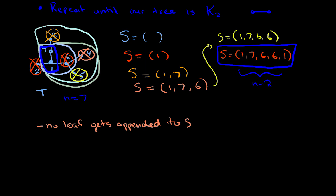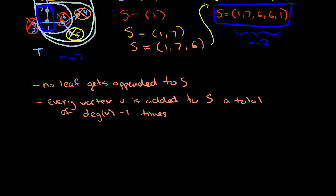No leaf gets appended to S. That was pretty obvious, because every time we found a leaf, we didn't append the leaf, we just appended the neighbor. But sometimes things get appended more than once. Notice that this six got appended twice. And if you think about it for a moment, you'll see that, in fact, the number of times that a vertex gets appended is equal to its degree minus one. Think about it, all the leaves have degree one, so that's why they get appended zero times. All of the vertices of degree two, for example, seven, are just appended once. And all of the vertices of degree three are appended twice, etc. So, in general, we actually know that every vertex, v, is added to S, a total of the degree of that vertex minus one times.